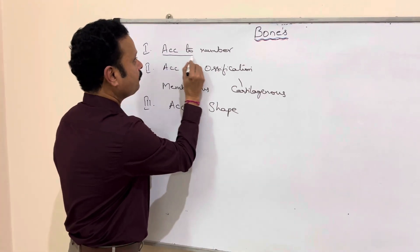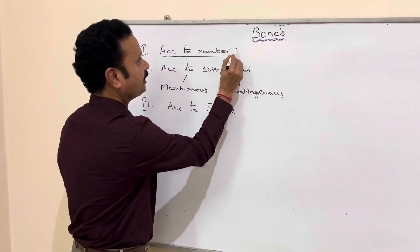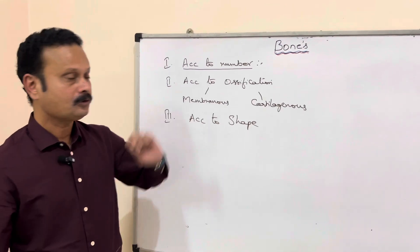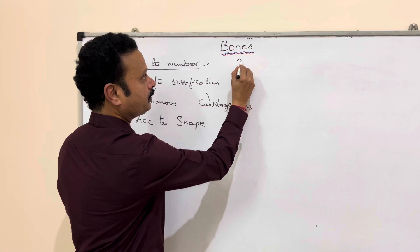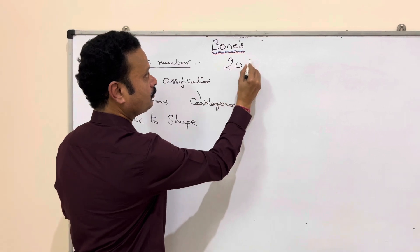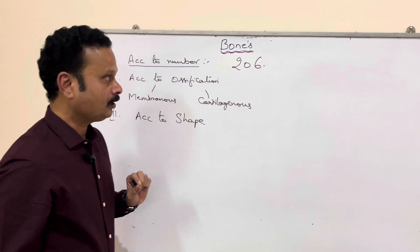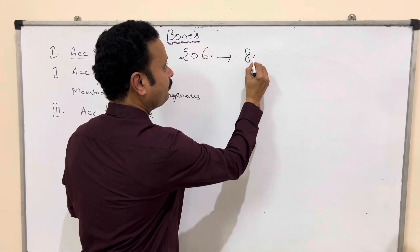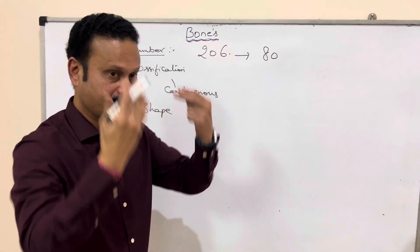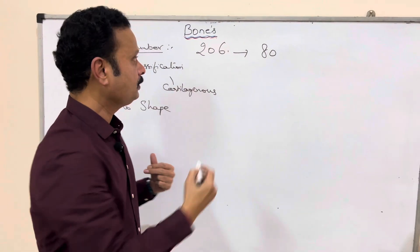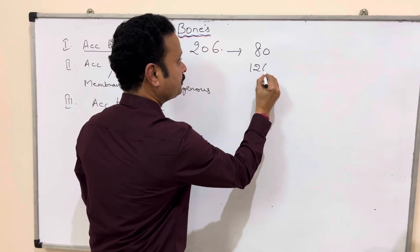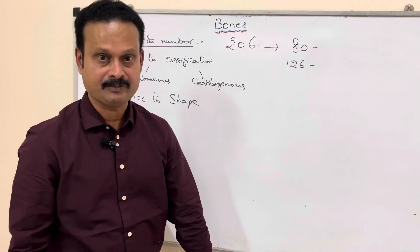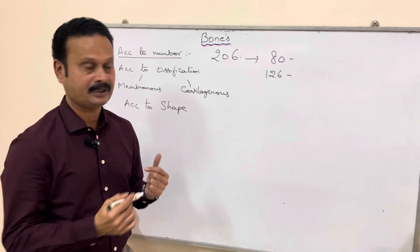Now I am going to talk about the classification according to number. The total number of bones is 206, of which 80 form the axial skeleton — that means in the midline — and 126 are present by the sides, that is in the limbs, which forms the appendicular skeleton.